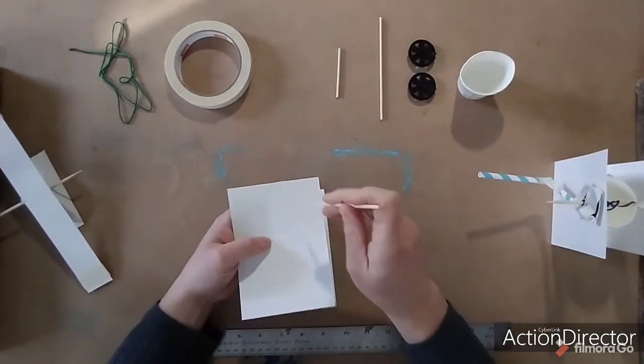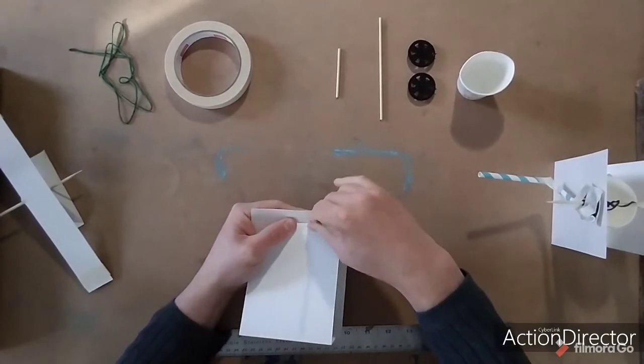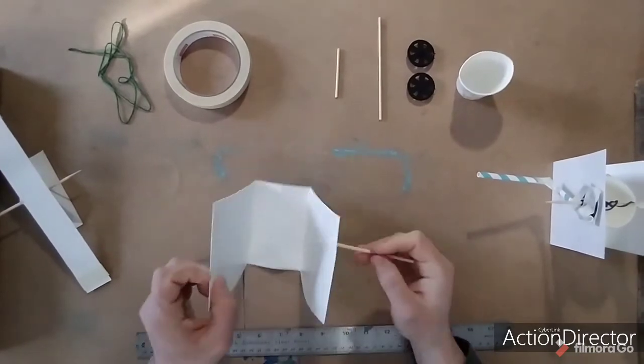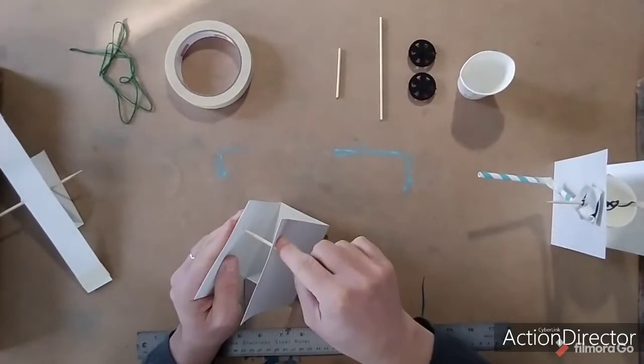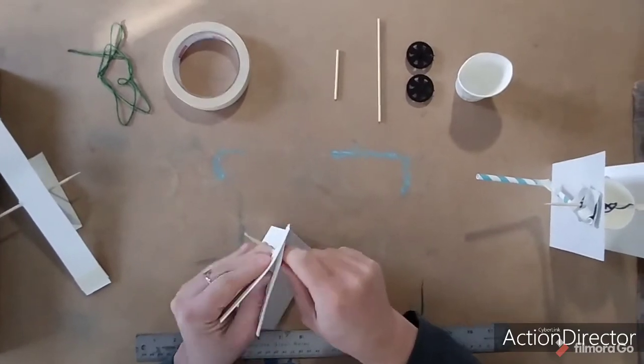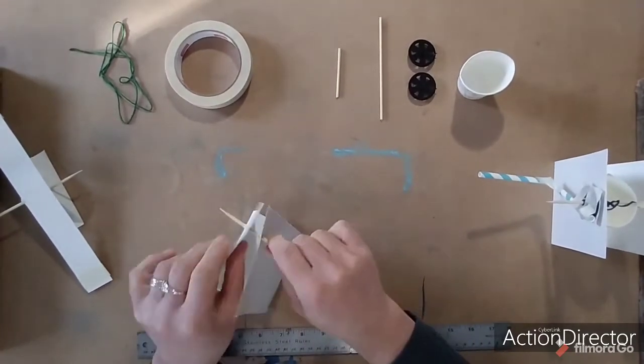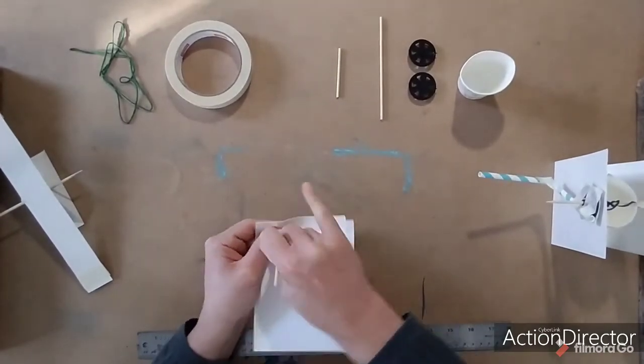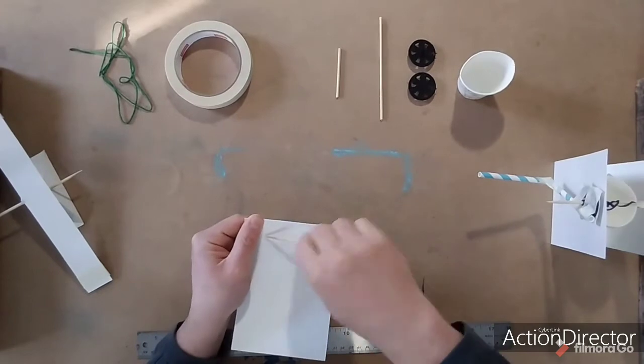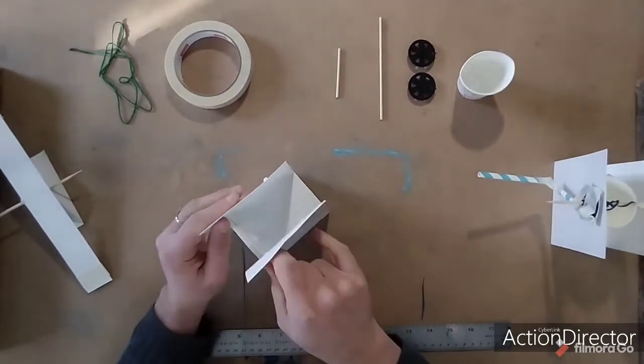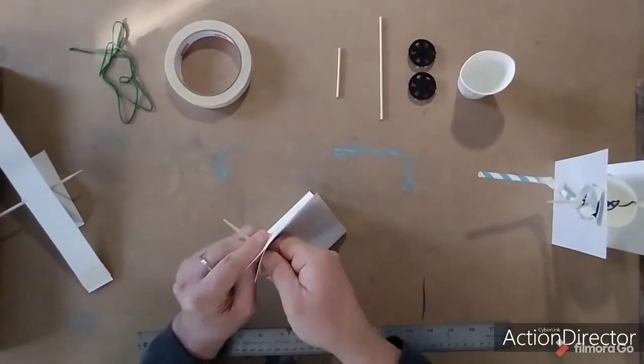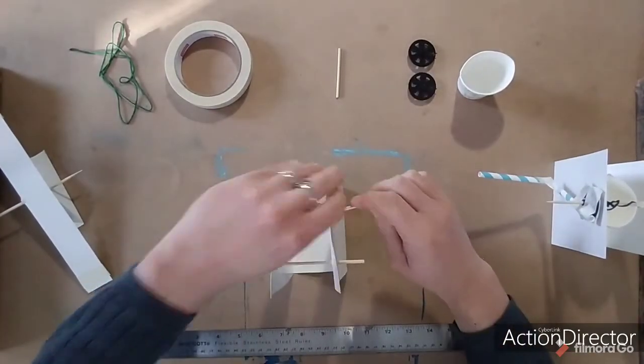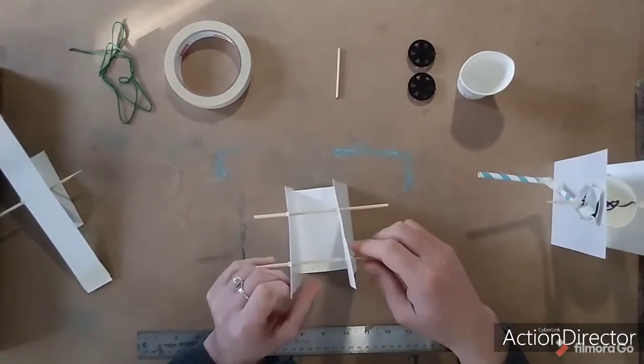Once you're done, pick a skewer that has a pointy tip and poke a hole in the top off to the right. Just like I'm doing here, let's get it to poke all the way through to the other side. Now take the skewer out and poke a second hole, but this time on the left top side. If you need help with this, don't hesitate to ask mom or dad.